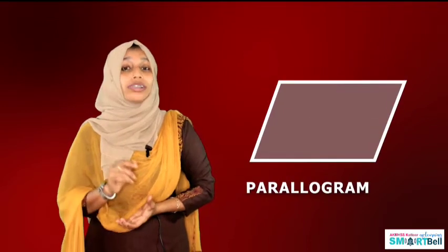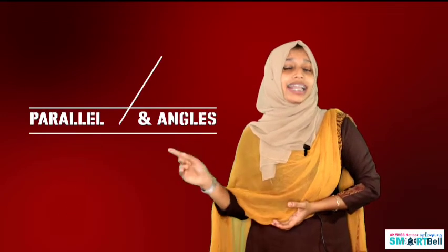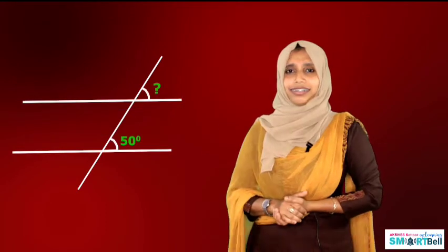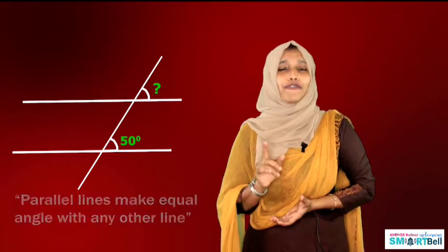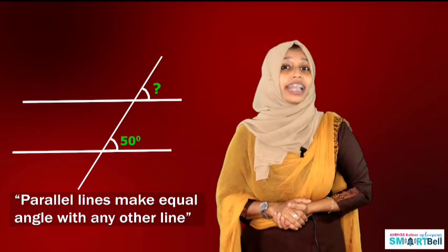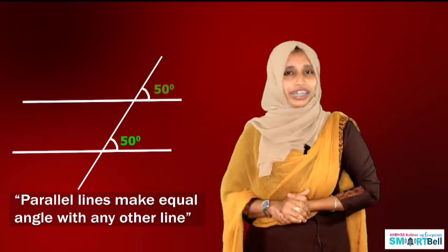Today we are going to discuss the topic parallel lines and angles. Look here — the top and bottom lines are parallel. We know that parallel lines should have the same slant with any other line. So what is the marked upper angle? It is 50 degrees.